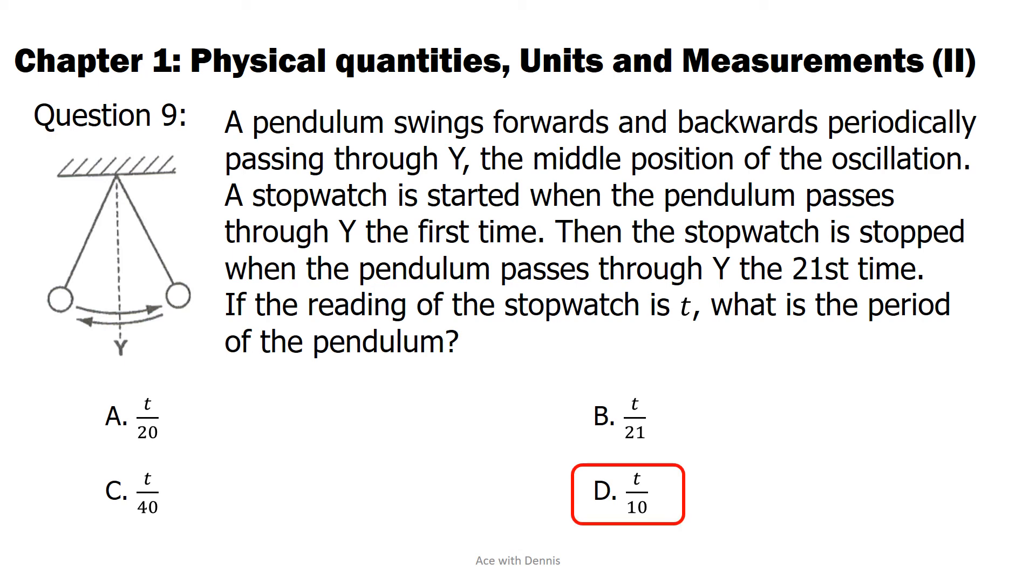The answer is C. T over 40. One complete oscillation occurs when the pendulum passes Y two times. There are 10 complete oscillations in this case. The first time passes Y is not counted.